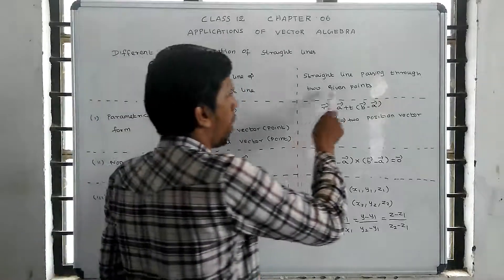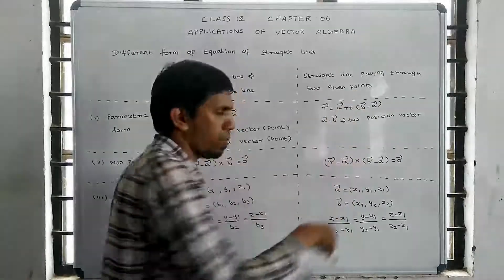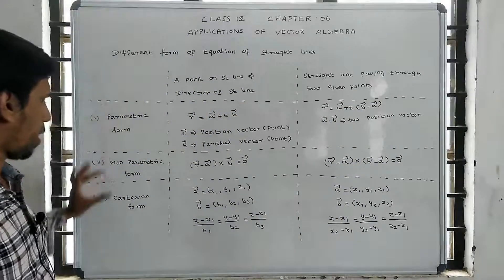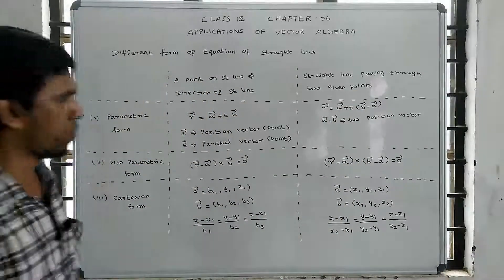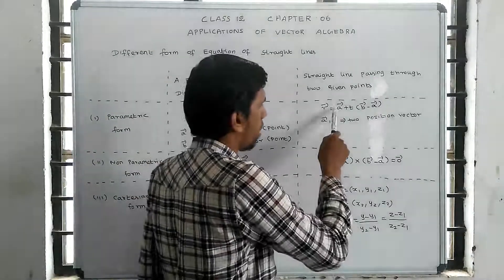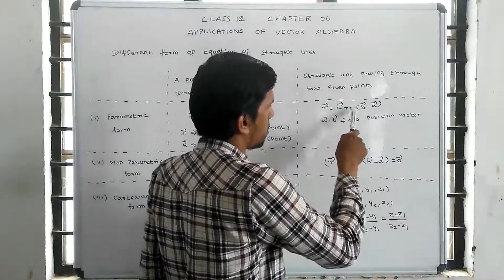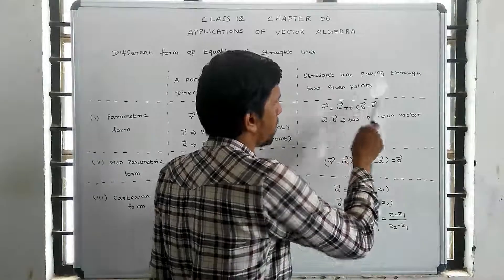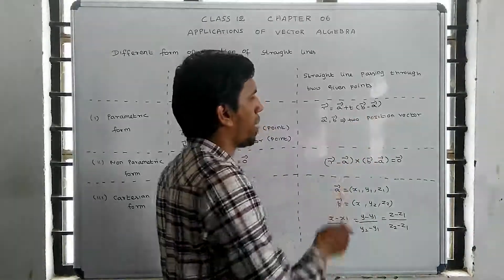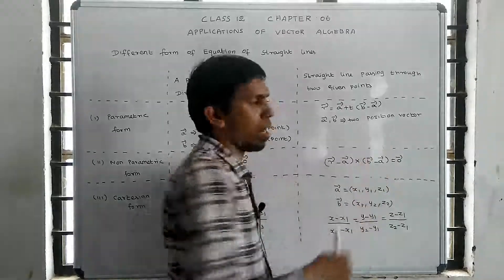Now for the two-point forms: the parametric form is R vector equals A vector plus T into (B vector minus A vector), where A vector and B vector are the two given points on the line.